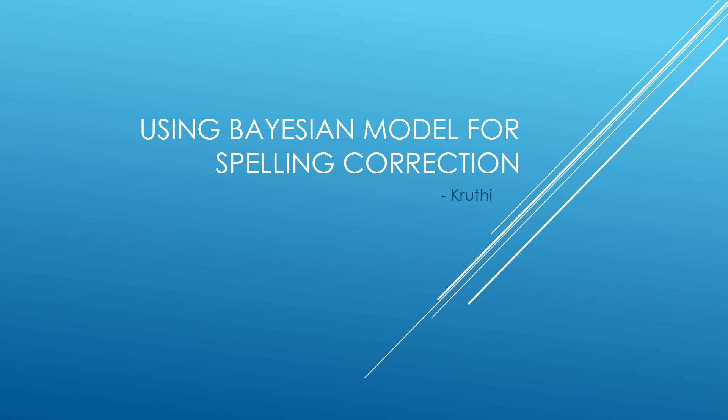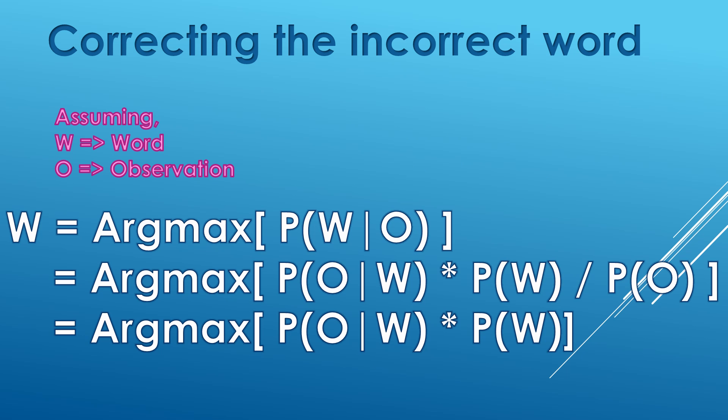Hello guys, this is Kruti here. I am back with yet another video to explain how we continue using Bayesian model for spelling correction. Assuming here that W stands for any word and O stands for observation, i.e., any word in the given sequence of words.